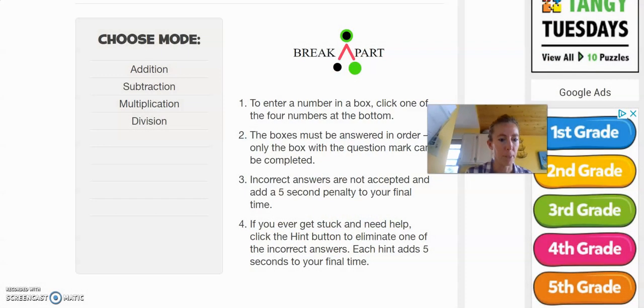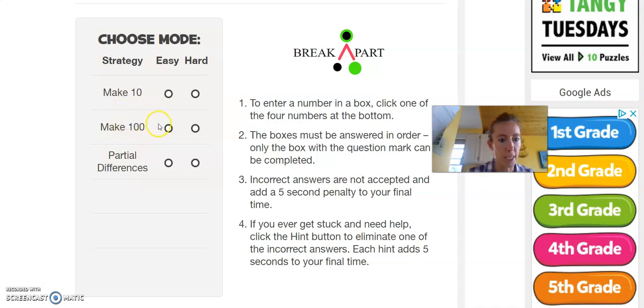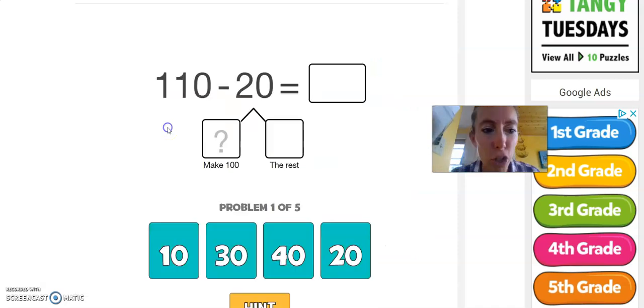Alright, let's figure out how to use the number 100 to help us subtract when we're working with hundreds. You're going to click on this link and it'll look like this: Break Apart. We're going to go to subtraction and use 100 this time. Let's click the easy version—although it's not that easy, but once you start practicing it will get better.